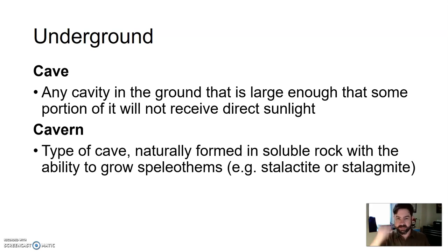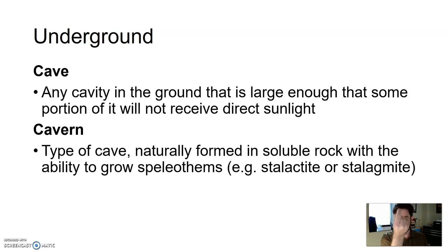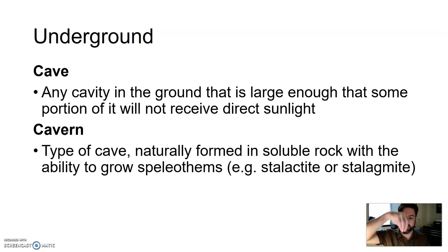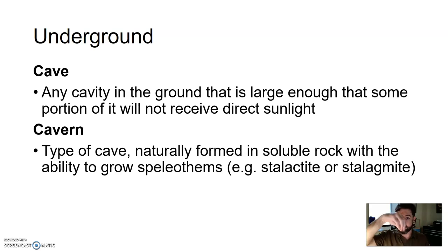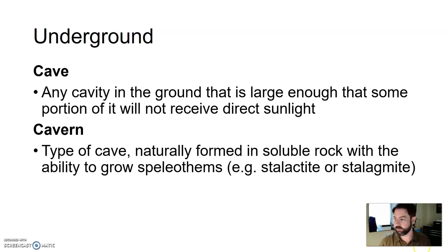Stalactites hang tight to the ceiling — they're the pointy things that hang from the top of a cavern. Stalagmites are the things that grow from the bottom up. Stalactites hold tight to the ceiling; stalagmites might grow tall enough to reach the ceiling. That's how you remember those.